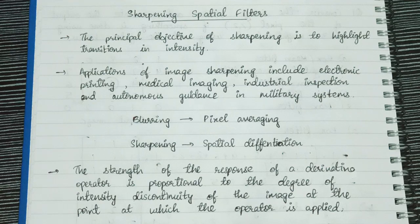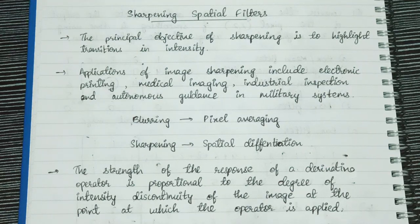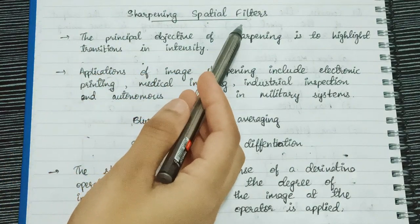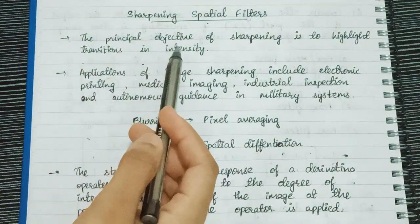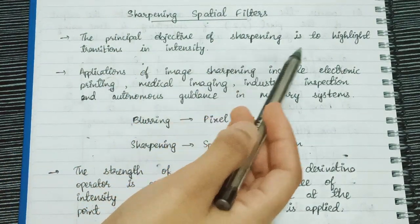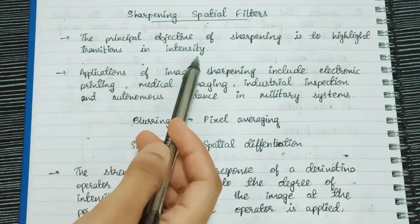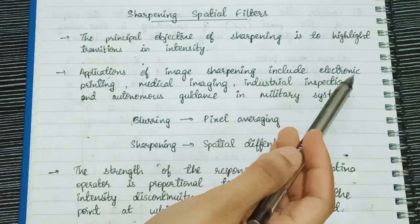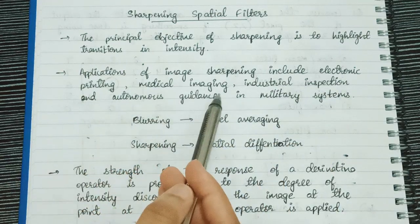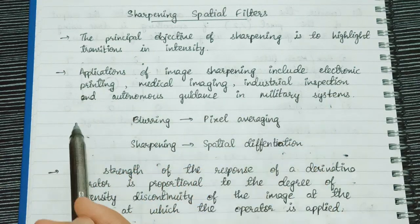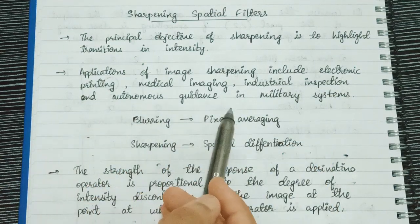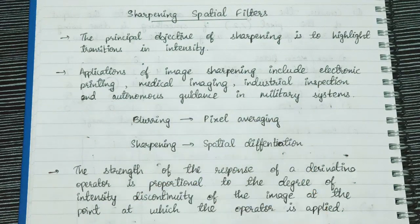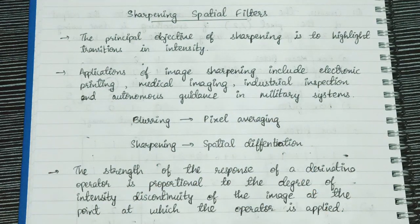Welcome to the 15th lecture of the DIP series. I'm Anushri Kariski and today we're going to study about sharpening spatial filters. The principal objective of sharpening is to highlight transitions in intensity. Applications of image sharpening include electronic printing, medical imaging, industrial inspection, and autonomous guidance in military systems.